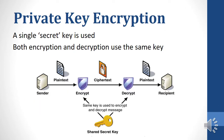Private key encryption is one way that data can be encrypted. There is only one single secret key which is used — the mathematical rules for encrypting the data. Both the encryption and the decryption use the same key. The key has to travel from the sender to the recipient along the same channel as the ciphertext, or encrypted data, and this makes this method not very secure.